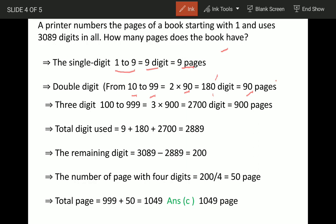Now 100 to 999, so total numbers are 900 and each number is having three digits, so 2700 digits used and pages printed here are 900. So nine here, 90 here, and 900 here.